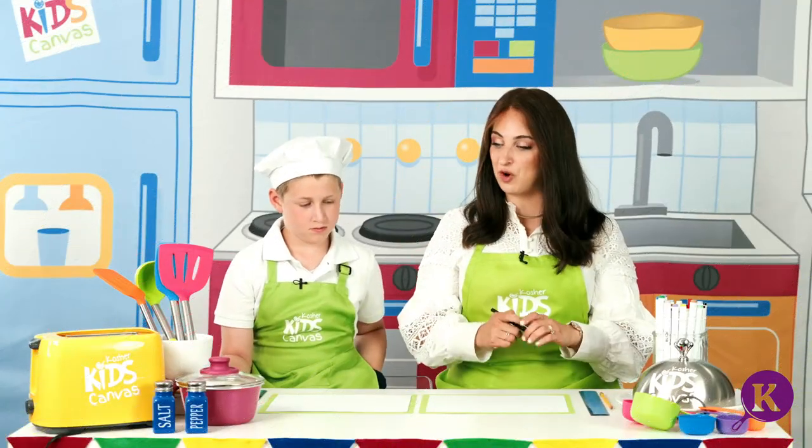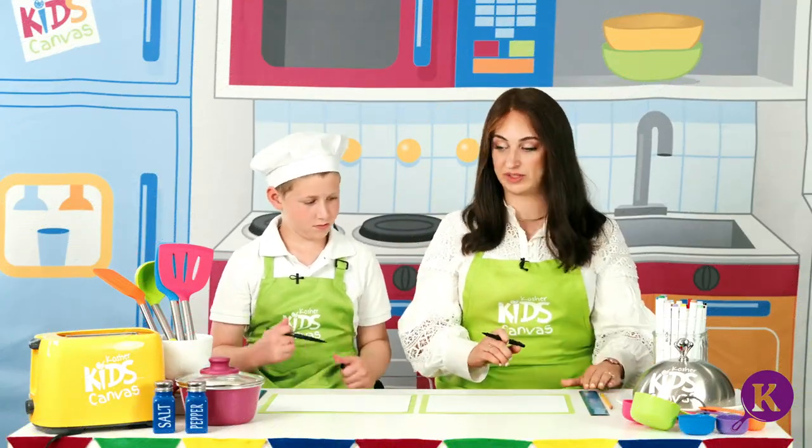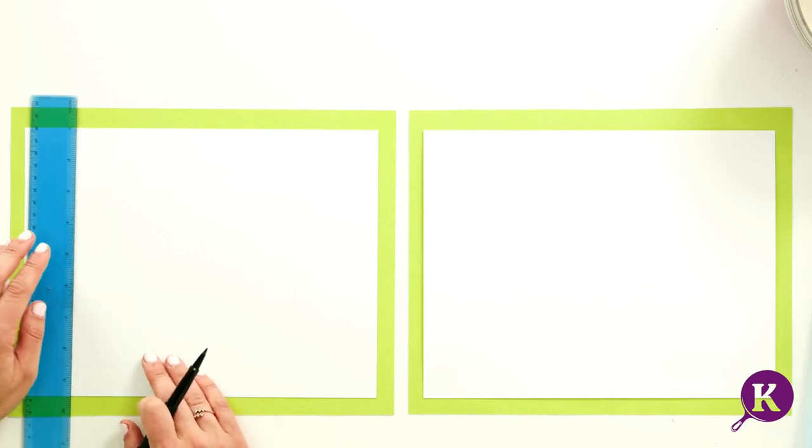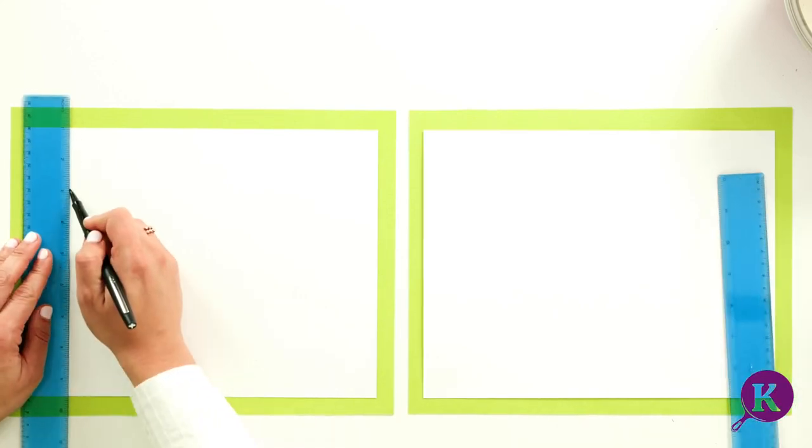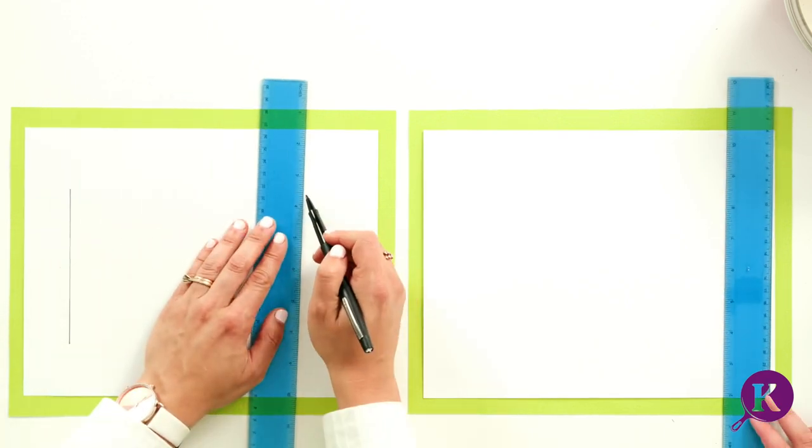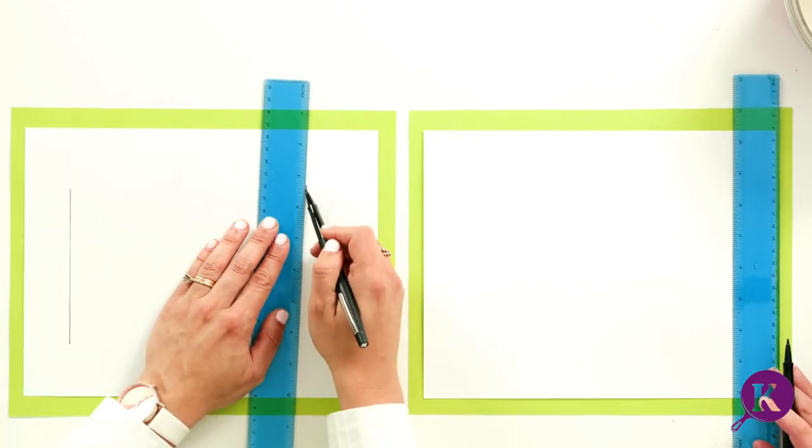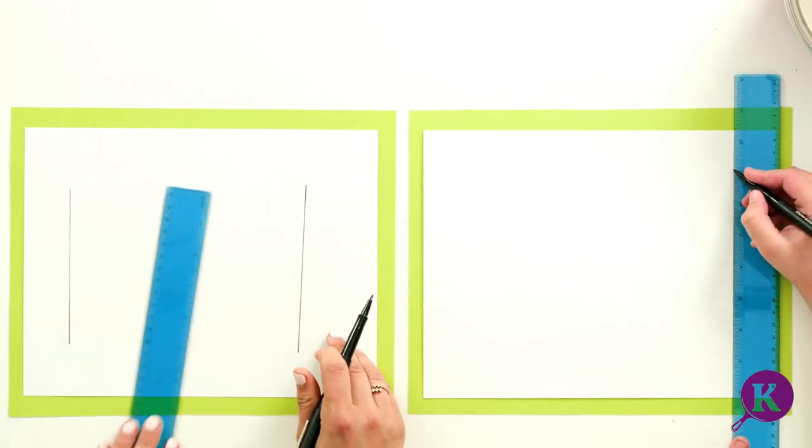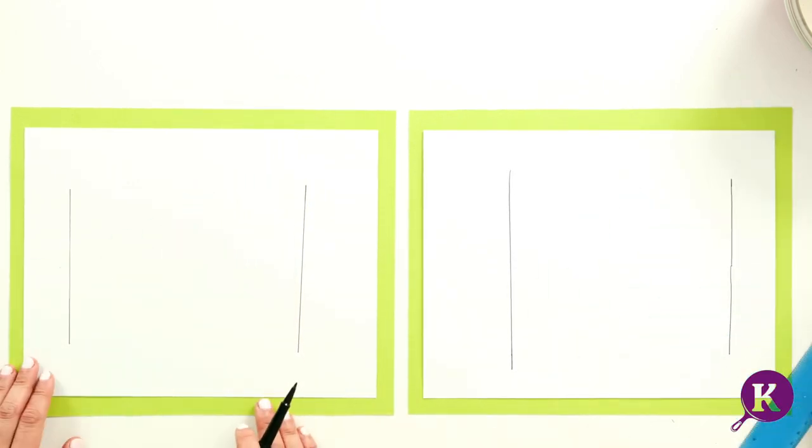So we are going to start with the walls of the Sukkah. I'm going to take my ruler, you don't have to, and I'm going to draw one side of the Sukkah here, and the other side of the Sukkah over here. Fantastic.